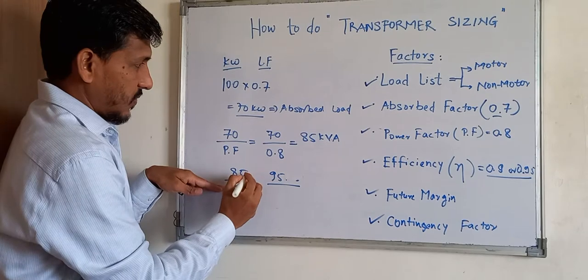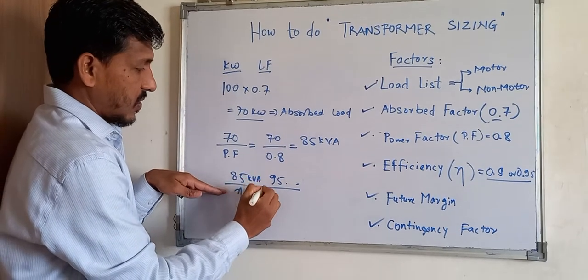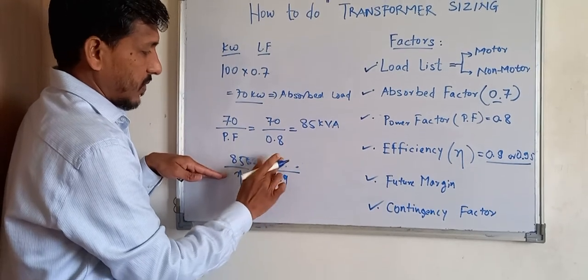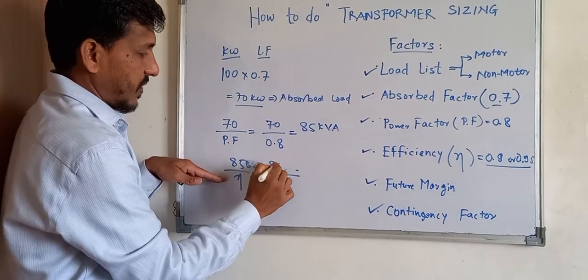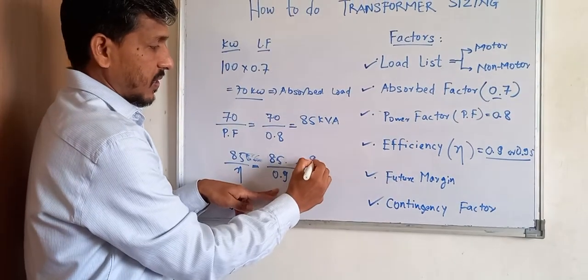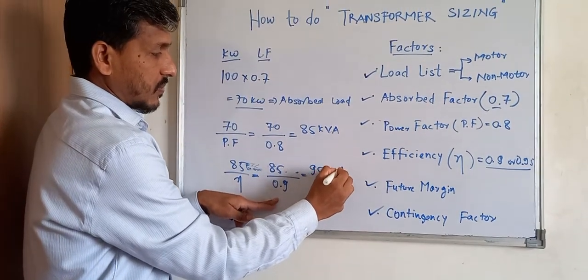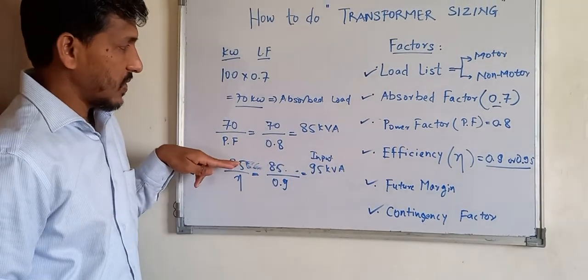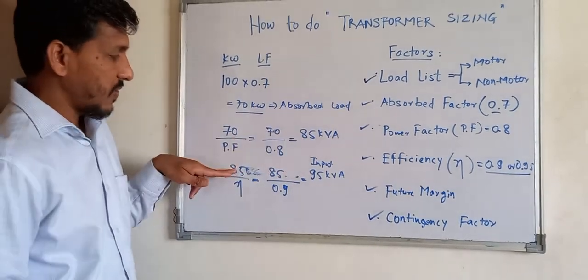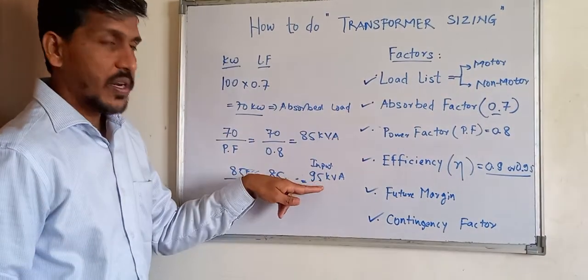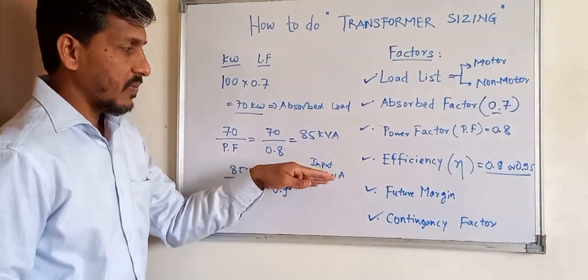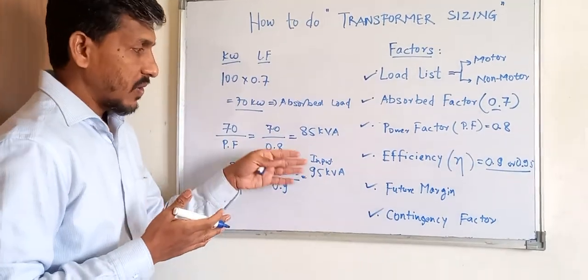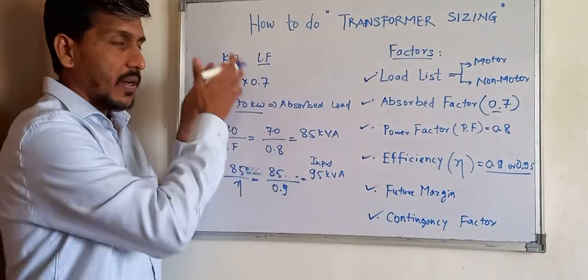Once you have the kVA value, divide it by efficiency — typically 0.9 or 0.95 from the motor catalog. Dividing by 0.95 gives you approximately 95 kVA, which is your input kVA. For every motor load, you must calculate this input kVA and include it in your load list.